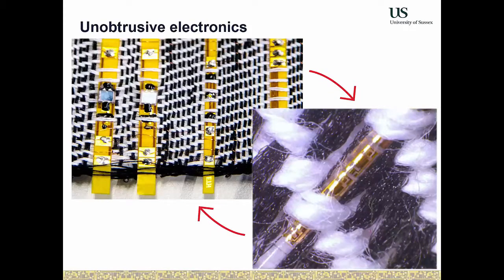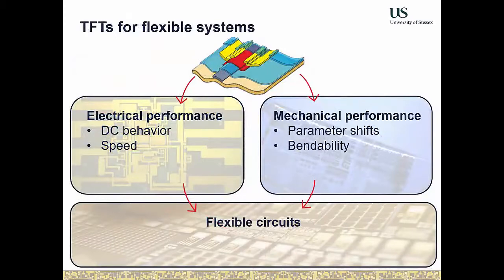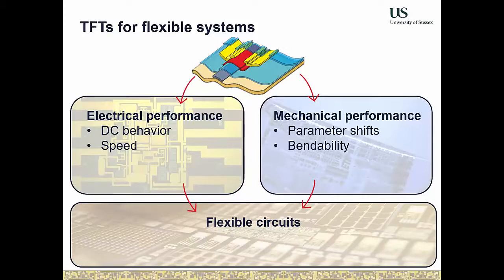On one hand we must optimize electrical performance — transistor speed, circuit complexity. On the other hand, we must also address mechanical performance, such as bendability and parameter shifts induced by bending. These two properties are not independent of each other for flexible circuits. We need to understand both fields individually and how they interact to fabricate properly functional flexible circuits.